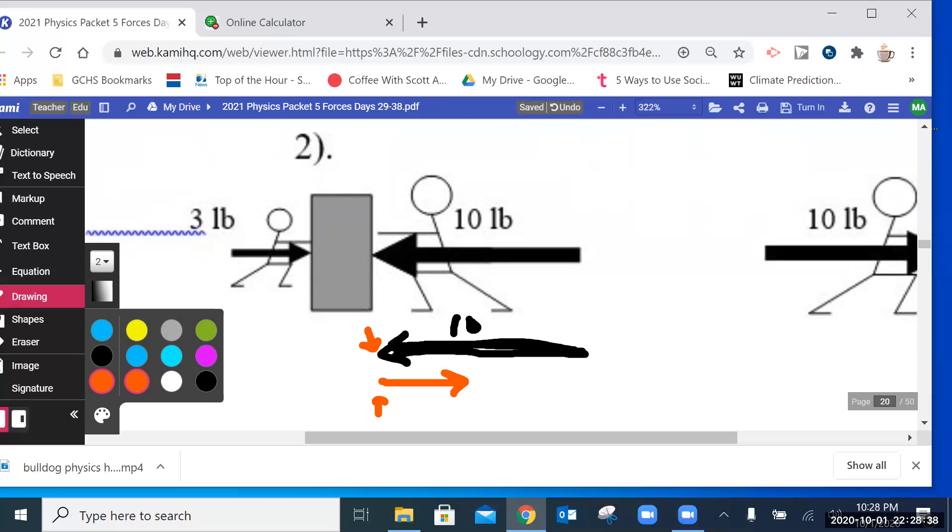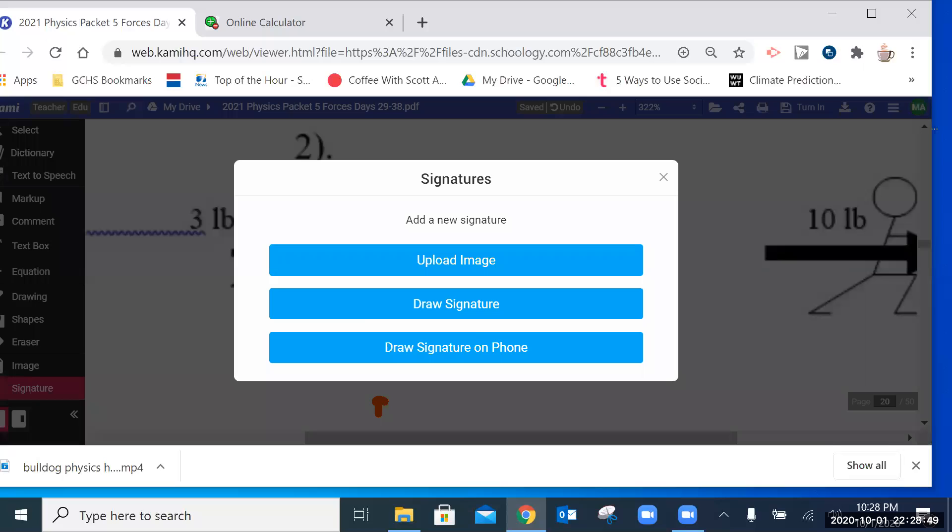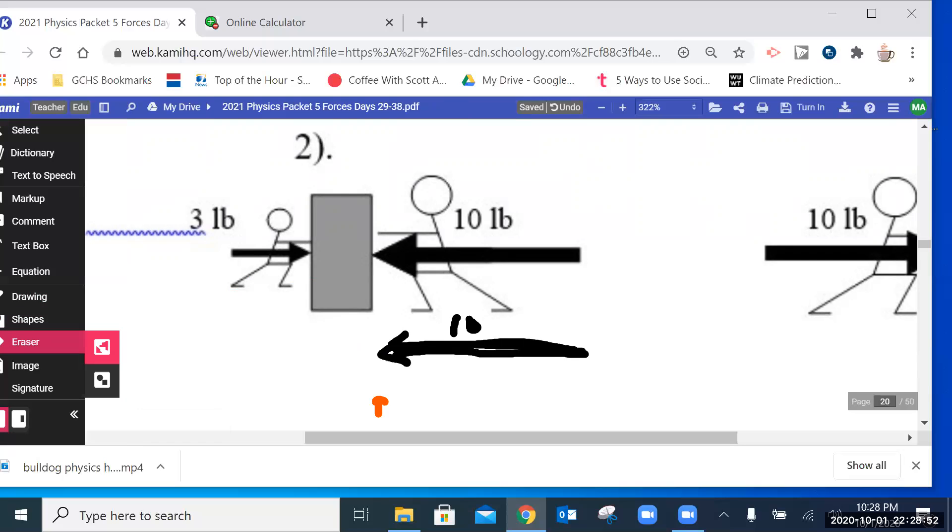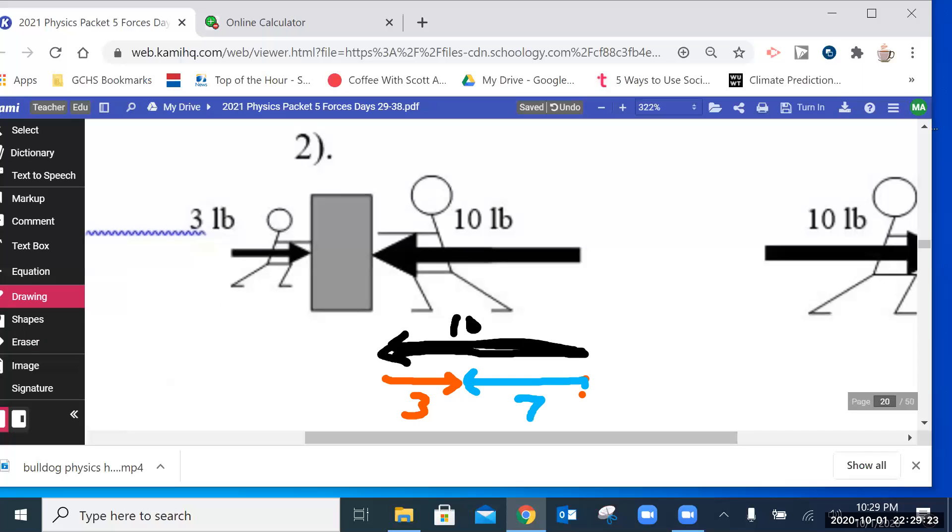So I call this drawing the vectors head to tail. Hang on a second. What's going on here? There we go. And I have to redraw this three-pound vector. The resultant, then, is the vector from the beginning to the end. The beginning is right here. I need a different color. The beginning is right there. And then to the end of our little train. And we can see, then, by observation, that that's going to be seven, which is probably what you probably would have expected at the very beginning of all this, seven pounds.